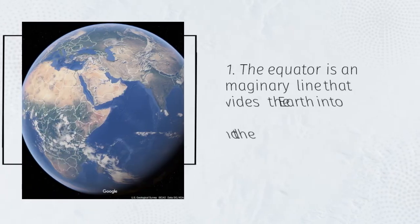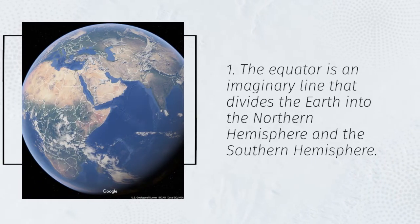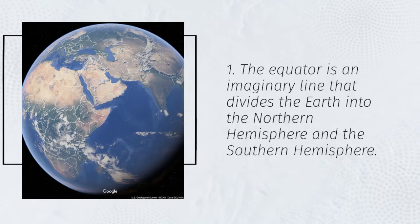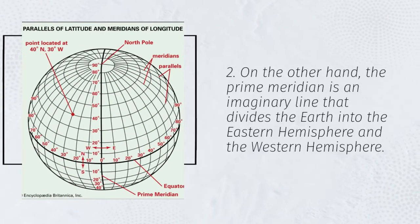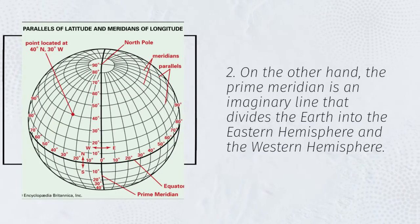1. The equator is an imaginary line that divides the Earth into the Northern Hemisphere and the Southern Hemisphere. 2. On the other hand, the prime meridian is an imaginary line that divides the Earth into the Eastern Hemisphere and the Western Hemisphere.